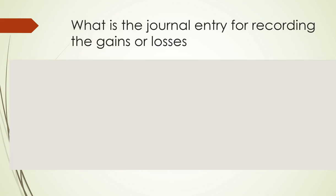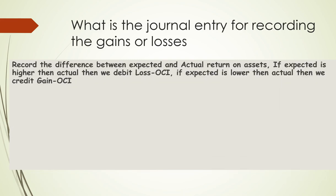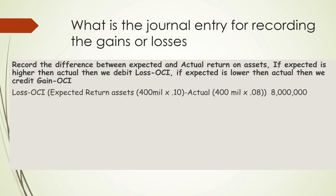For the journal entry recording gains or losses, record the difference between the expected and actual return on assets. In our case, the expected return was higher than what was actually received, resulting in a loss of 8 million. Subtracting that from the expected 40 million gives the actual 32 million shown in plan assets.